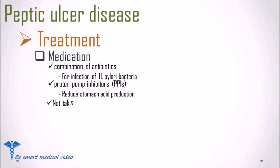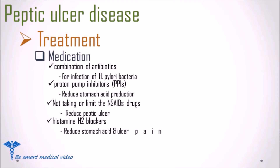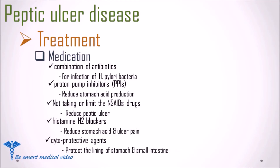Your doctor may recommend not taking NSAIDs or limiting their use. Your doctor may also prescribe histamine type 2 antagonists, also known as H2 blockers, to reduce stomach acid released into your stomach and help ulcer healing. H2 blockers also reduce ulcer pain. Additionally, your doctor may recommend medications called cytoprotective agents that help protect the lining of your stomach and small intestine until the ulcer has healed.